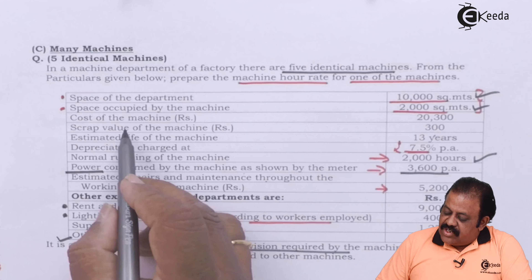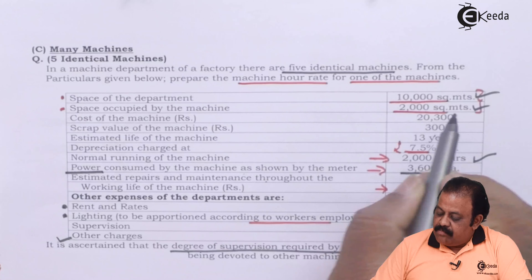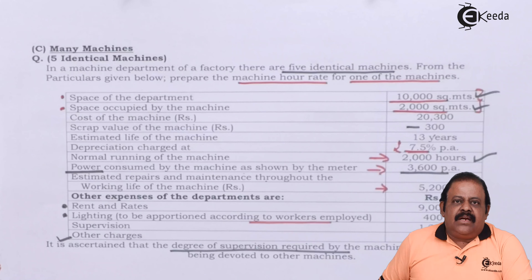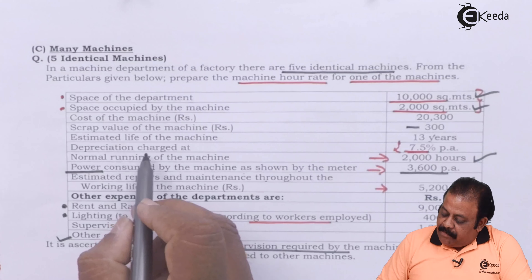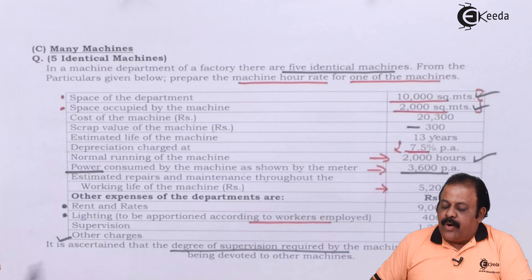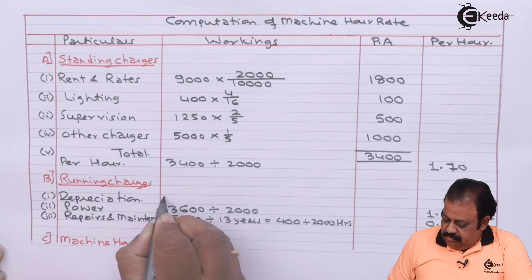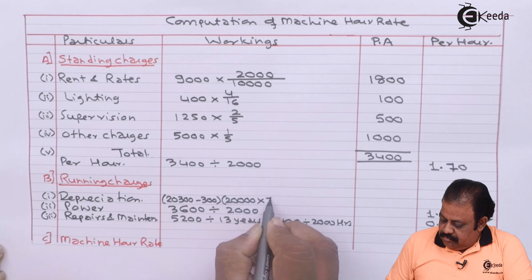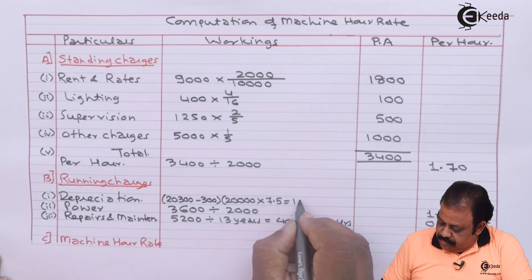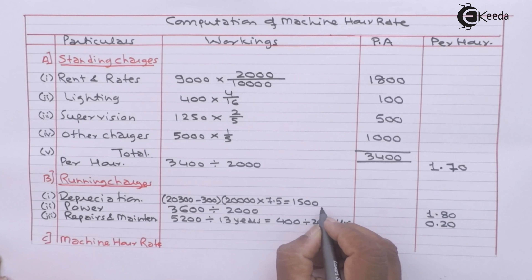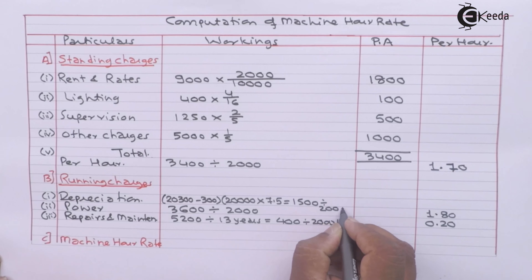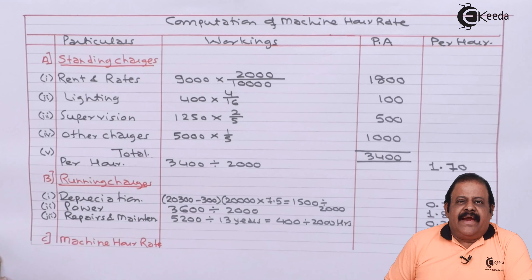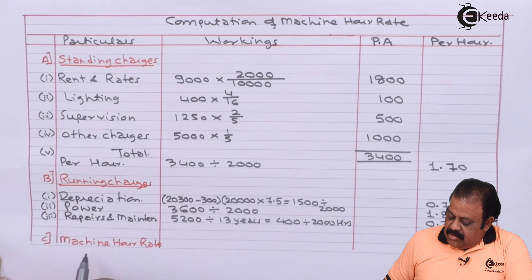For depreciation, cost of the machine is Rs. 20,300. Deducting scrap value of Rs. 300, the actual cost is Rs. 20,000. Depreciation is charged at 7.5% per annum, giving Rs. 1,500 per year. Divided by 2,000 hours, depreciation per hour comes to Rs. 0.75.